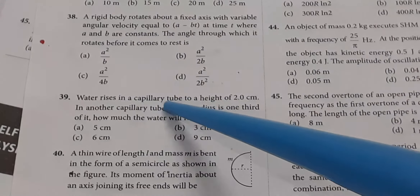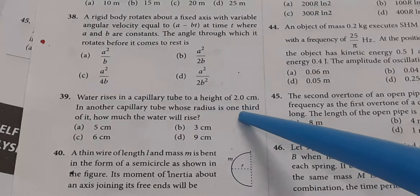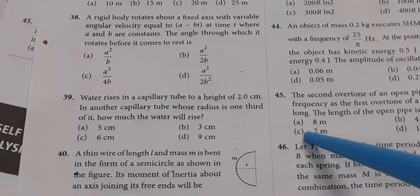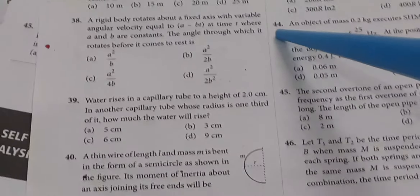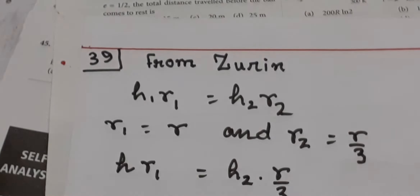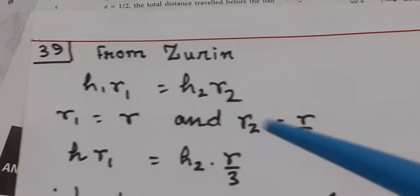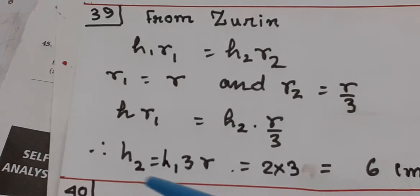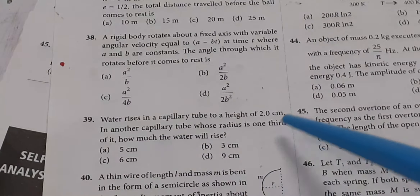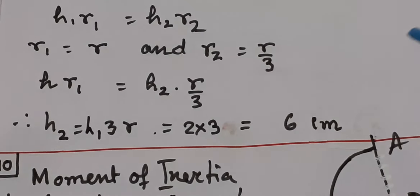Water rises in a capillary tube to a height of 2 cm. In another capillary tube whose radius is one third of it, how much will the water rise? From Jurin's law: radius × height = constant, so H1·R1 = H2·R2. With R2 = R/3 and H1 = 2 cm: H2 = 3 × 2 = 6 cm.